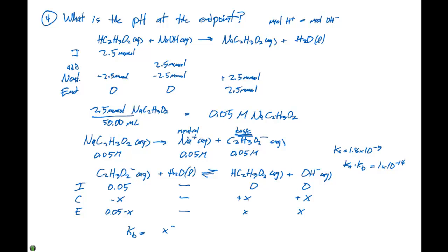when we approximate here, we can say x² divided by 0.05-x is going to equal the Kw divided by the Ka, which is 1×10^-14 divided by 1.8×10^-5. If we go through here and we do the math, our x is going to equal 5.3×10^-6.